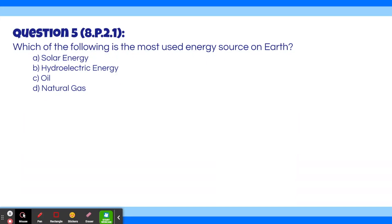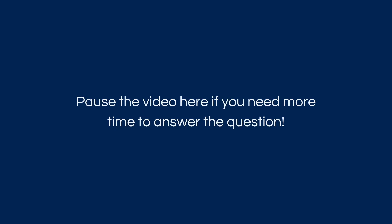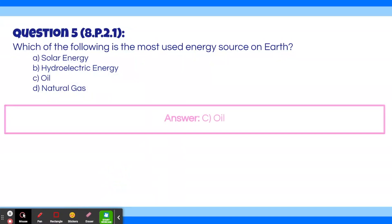Question 5. Which of the following is the most used energy source on Earth? A. Solar energy. B. Hydroelectric energy. C. Oil. D. Natural gas. The answer is C, oil. Oil makes up about 39% of the world's energy consumption. This makes sense because, as we said in question two, fossil fuels are the largest sources of Earth's energy.